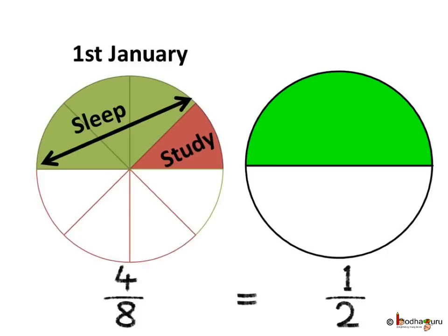Even pictorially, you can figure out whether we take 4 parts out of 8 parts or 1 part out of 2 parts of the whole. The colored portion of the whole is the same in both cases. So Khushi spent half of the day in sleep and study, and the rest of the half day with her friends. She enjoyed a lot with her friends that day. Right children?